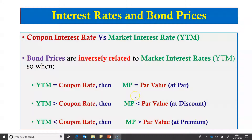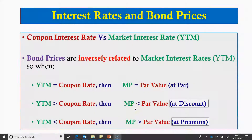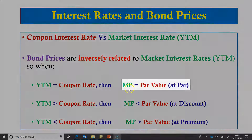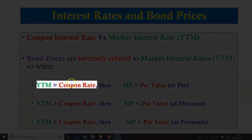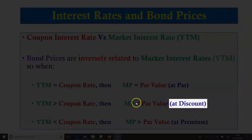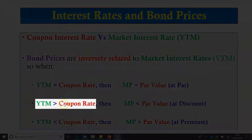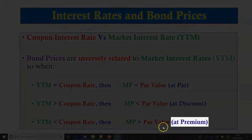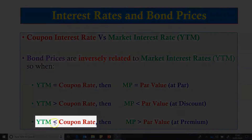These relationships will help us in the calculation of YTM on a bond that is selling at premium and a bond that is selling at a discount from par value. A bond selling at par value will have its YTM equal to the coupon rate. A bond selling at a discount will have its YTM greater than the coupon rate, and a bond selling at premium will have a YTM less than the coupon rate.